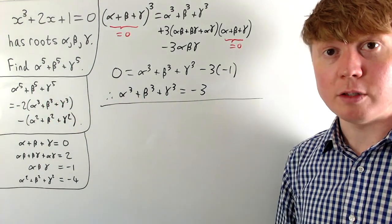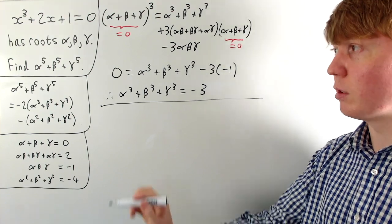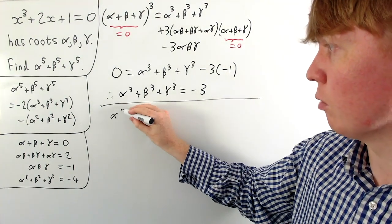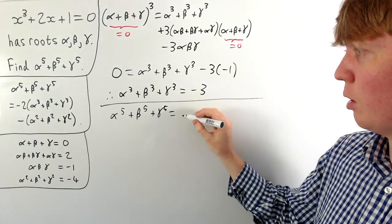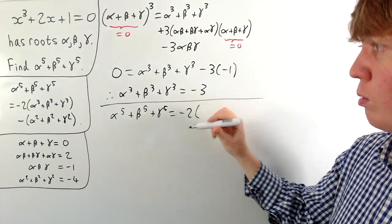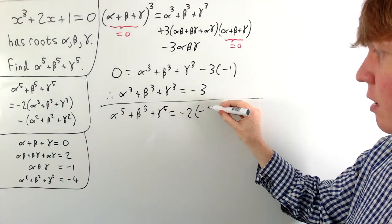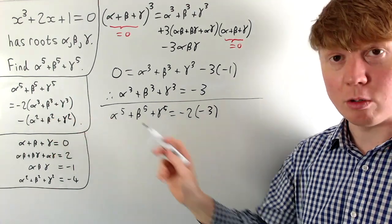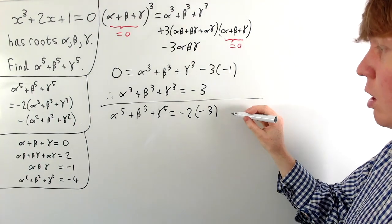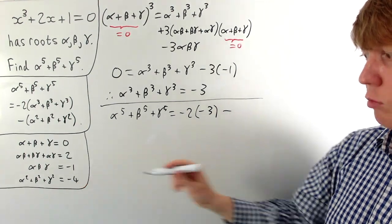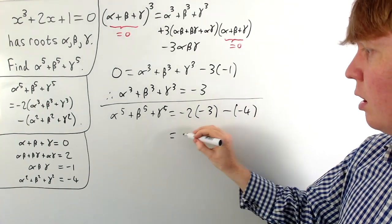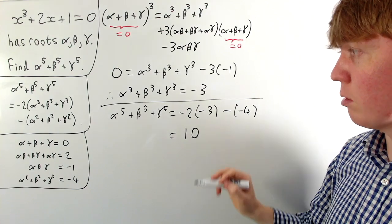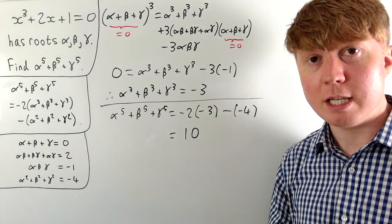Now we can read off the final answer. The sum of fifth powers equals negative two times the sum of cubes, minus the sum of squares: that is negative two times negative three, minus negative four, which gives six plus four equals ten. The sum of fifth powers of the roots of this cubic is ten.